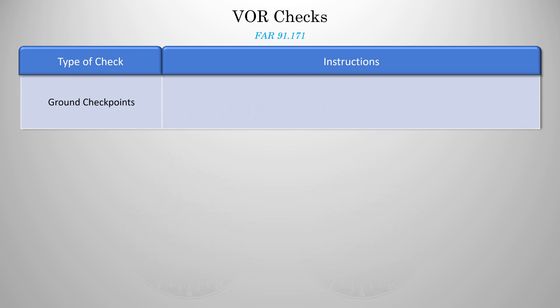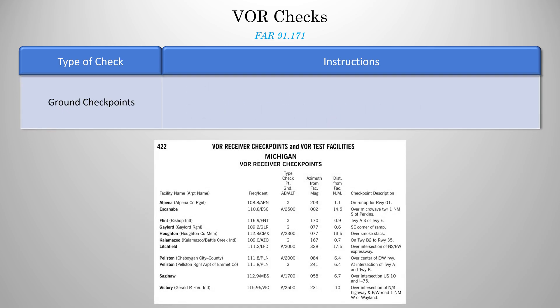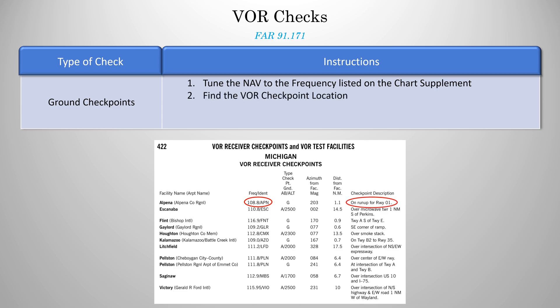Ground checkpoints can be found near the back of the chart supplement, on the same page as the VOT checks. First, find the one for your airport, then tune your receiver to the listed frequency. Next, go to the checkpoint location on the airport — in this case, on the run-up for runway 01. Finally, compare the indicated bearing against what is listed. You should be no more than plus or minus 4 degrees off.